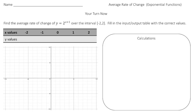Welcome back. Let's see how you did with this practice problem. The goal is to find the average rate of change of the function y equals 2 to the (x plus 1) power for the interval negative two to two. We're going to first fill in the input-output table, then graph it, and then figure out the rate of change.